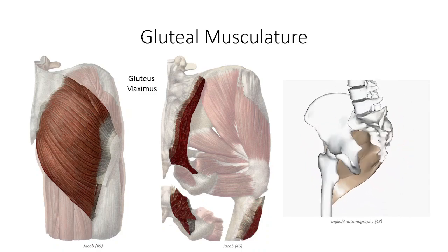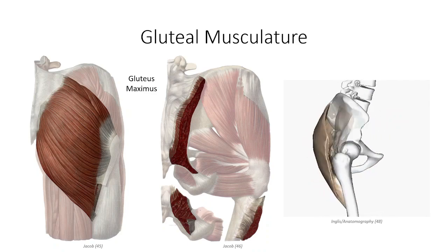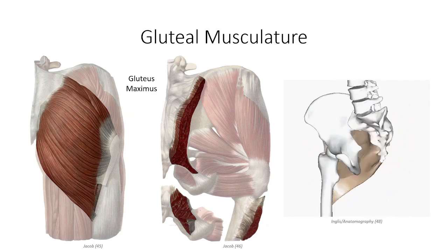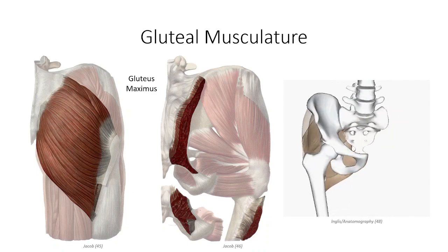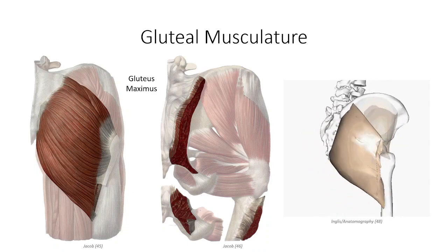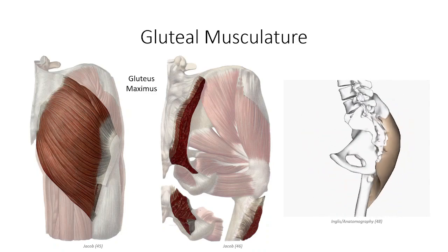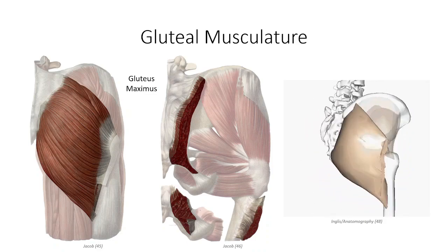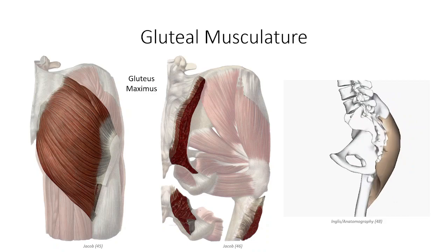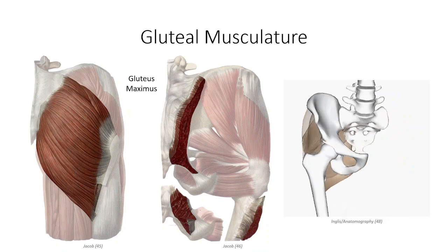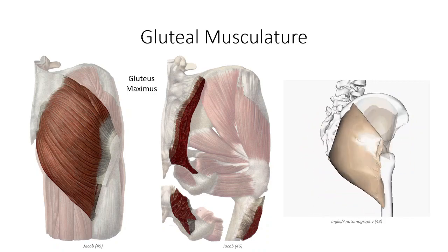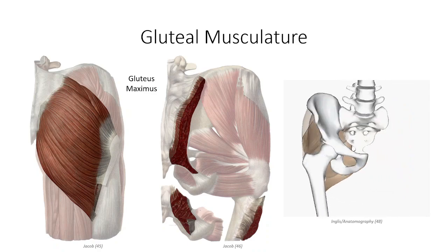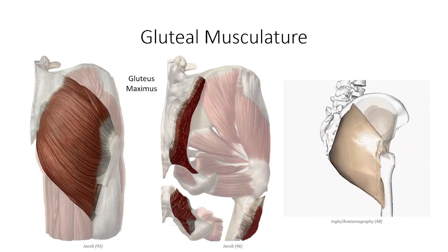The gluteus maximus contracts to generate a rather forceful extension of the hip joint from a flexed position, such as rising from a chair or climbing stairs. The muscle shows minimal activation while walking on a level surface; in that situation we place greater reliance on the hip extensors in the posterior compartment of the thigh. The muscle is also a powerful external rotator of the hip. Gluteus maximus is supplied by the inferior gluteal neurovascular bundle, which will be discussed later.